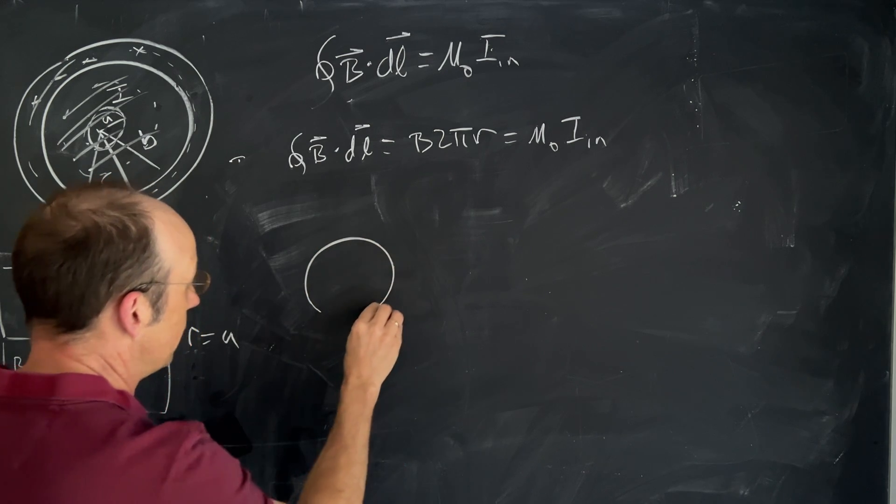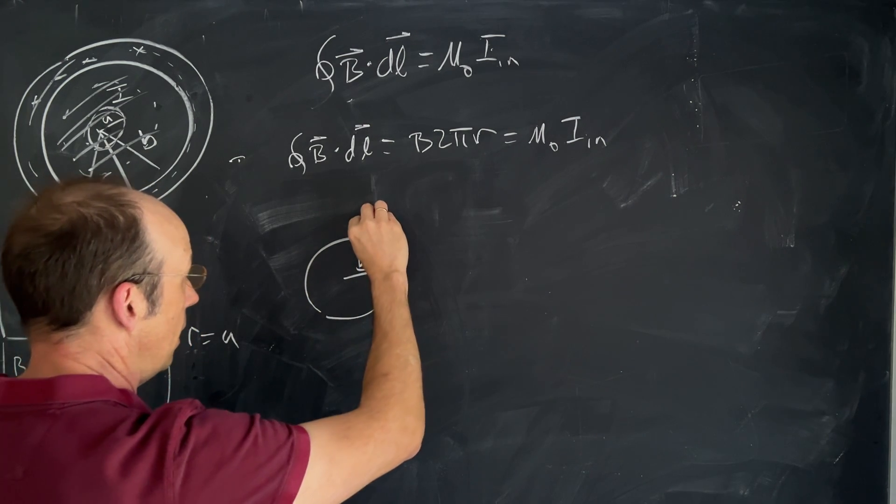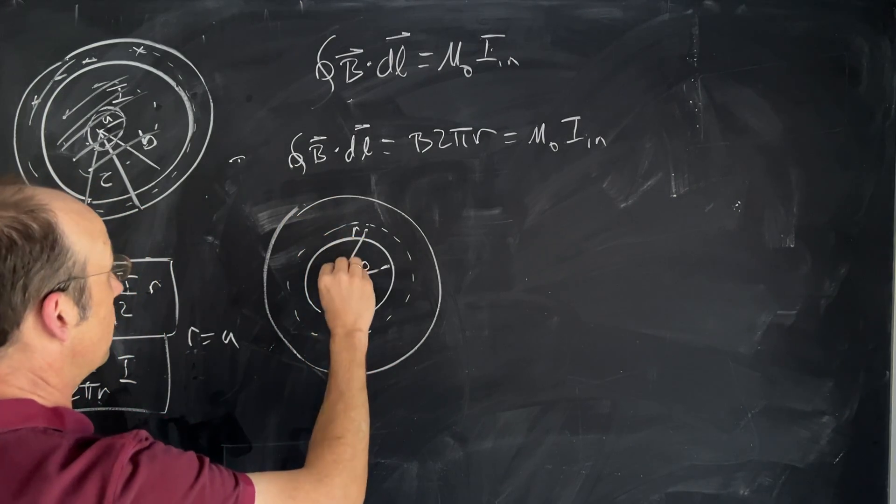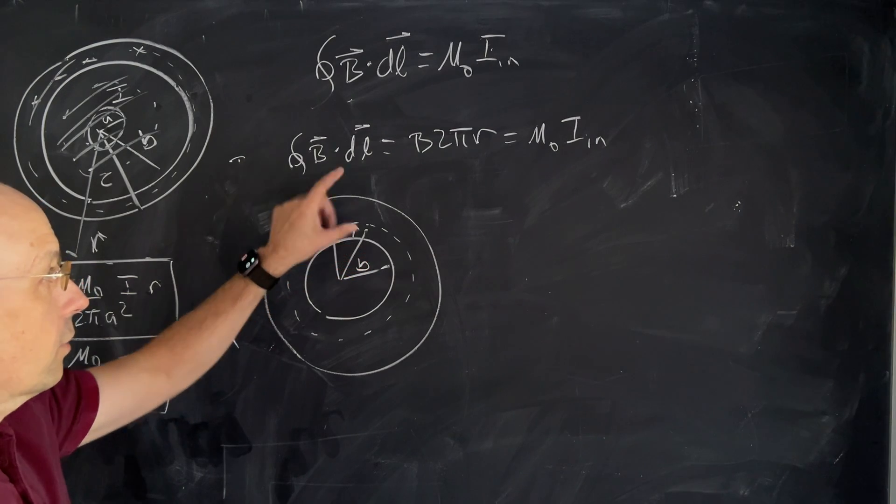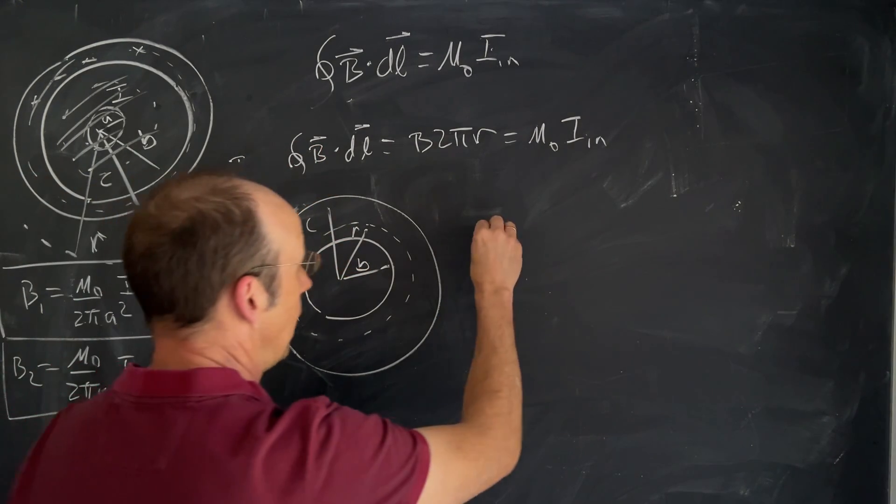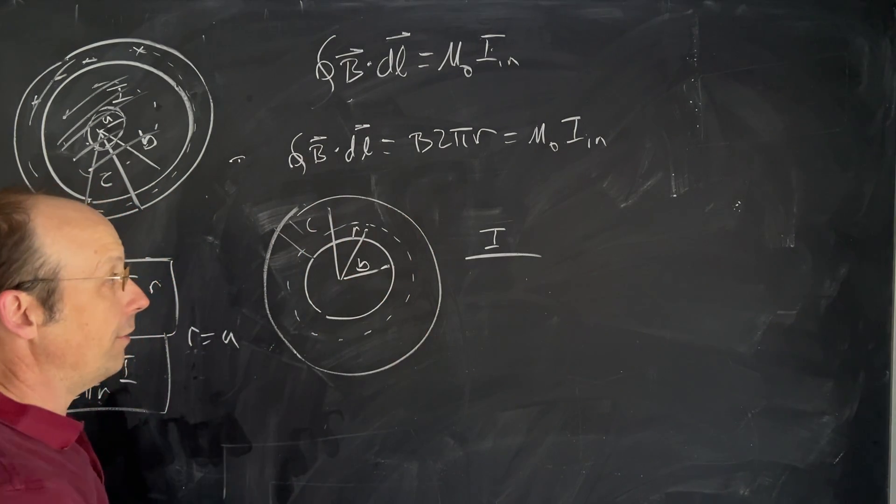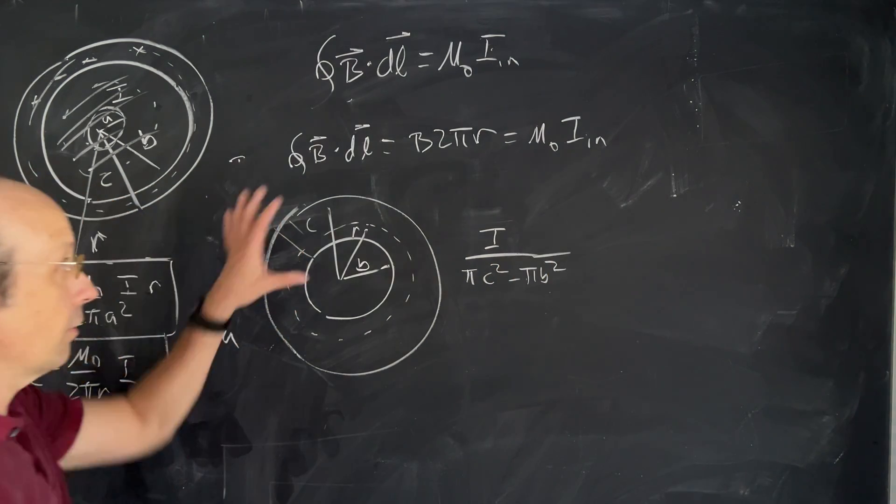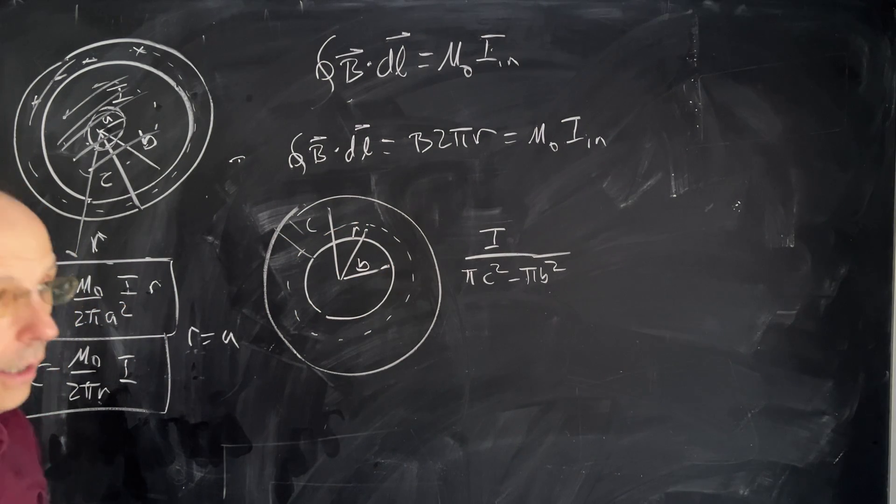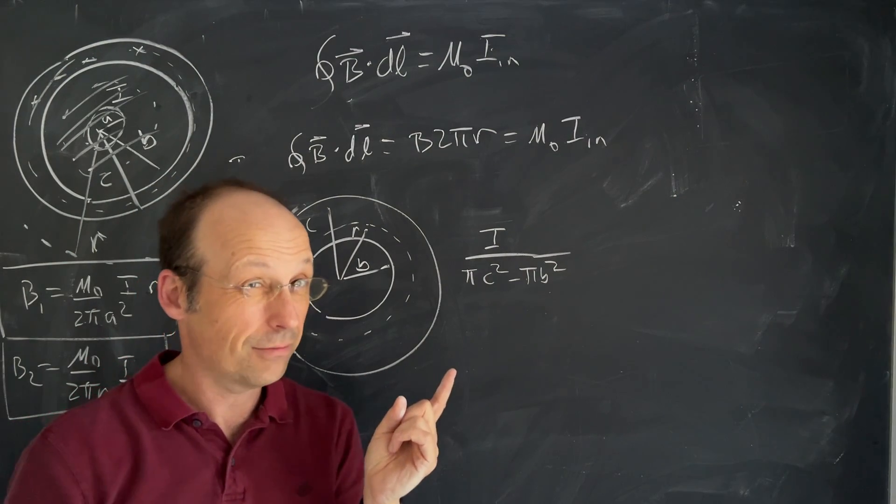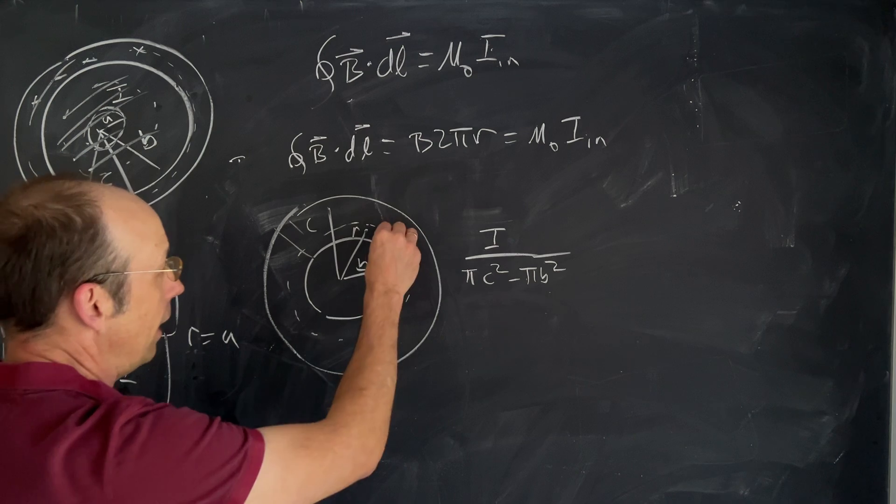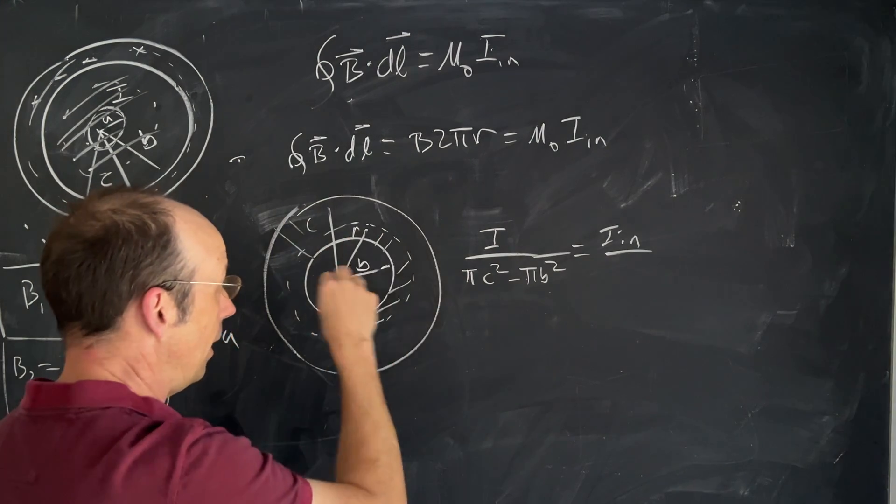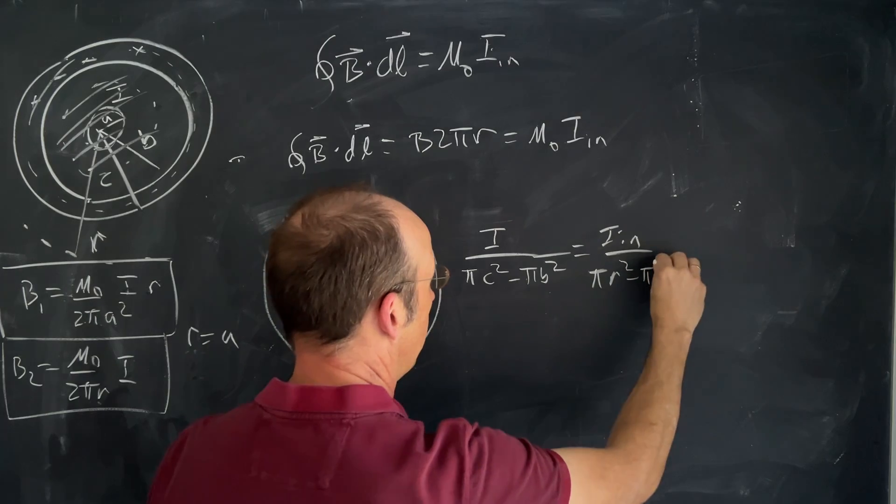Because if I have this B and this is R and this is C. So let's first find the total current divided by the total area. So that's I divided by this total area. Well, that's going to be equal to πC² minus πB², right? It's the area of the whole circle minus the area of the hole. And the area right here is going to be equal to IN divided by that area, which is going to be πR² minus πB².